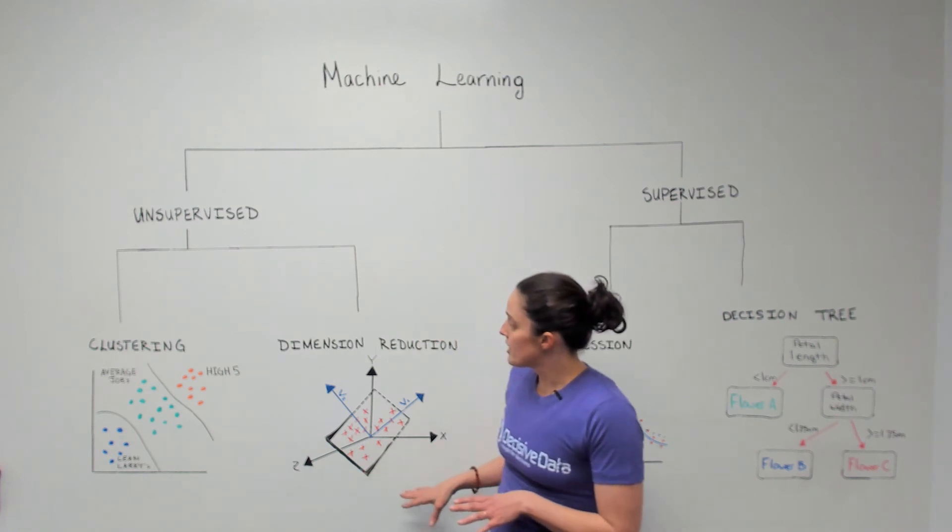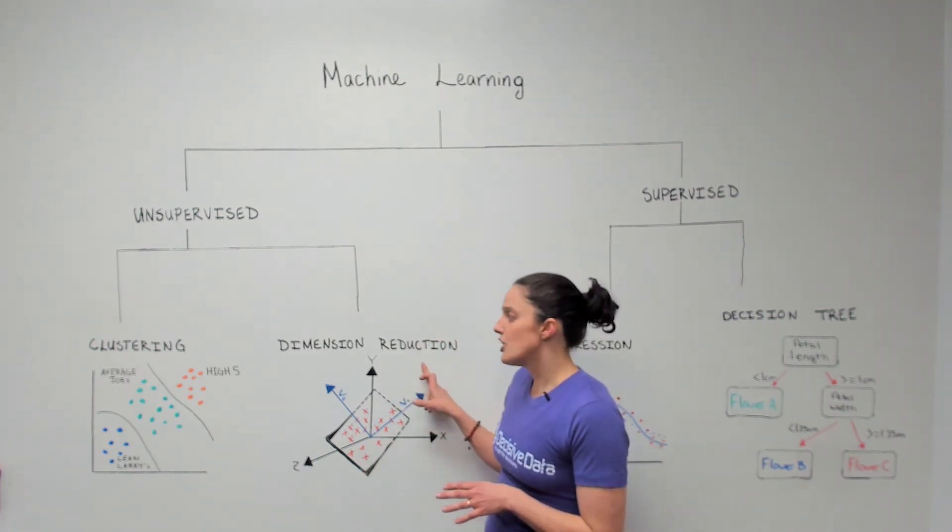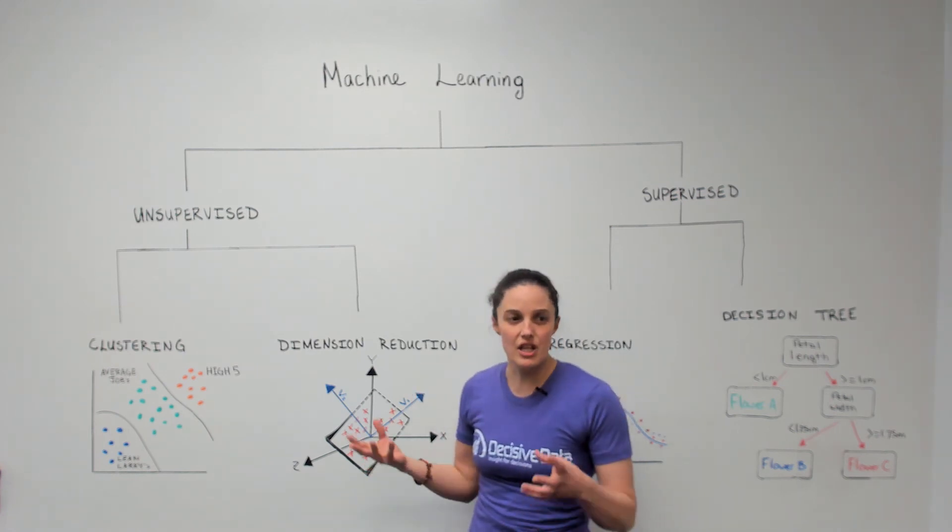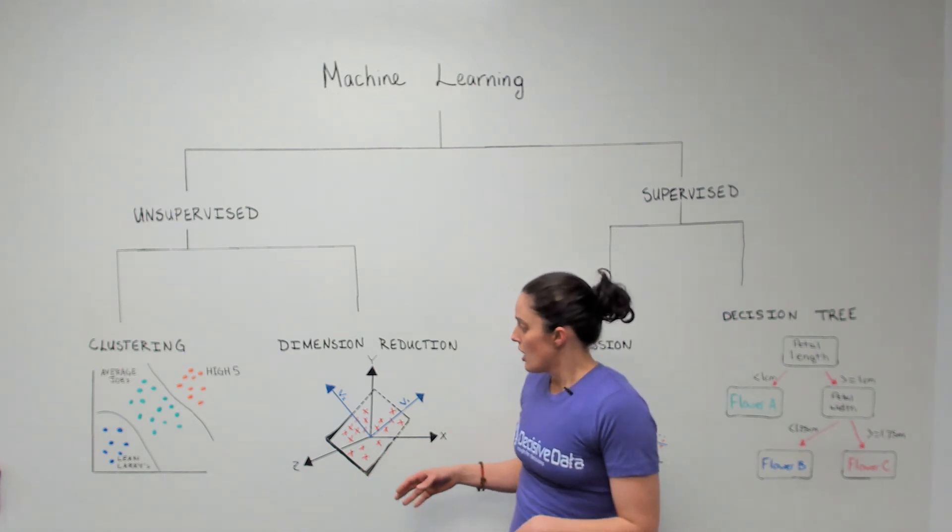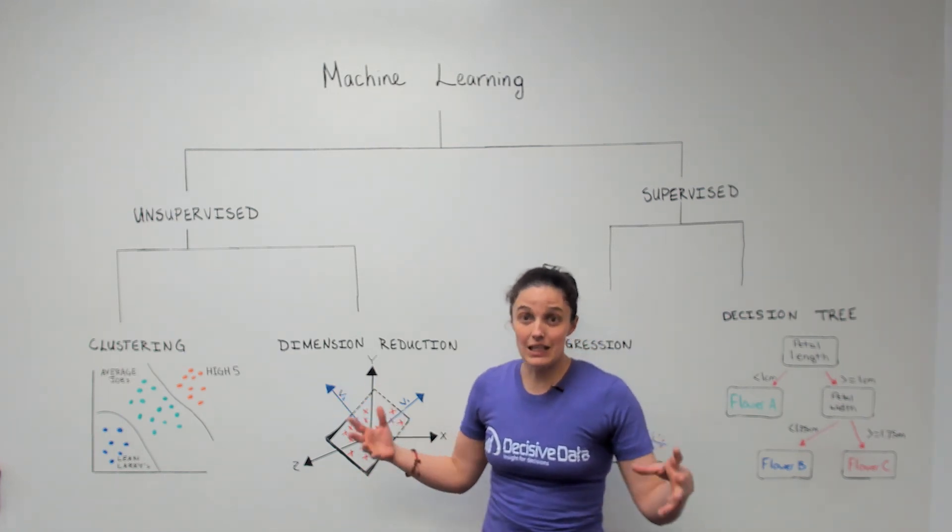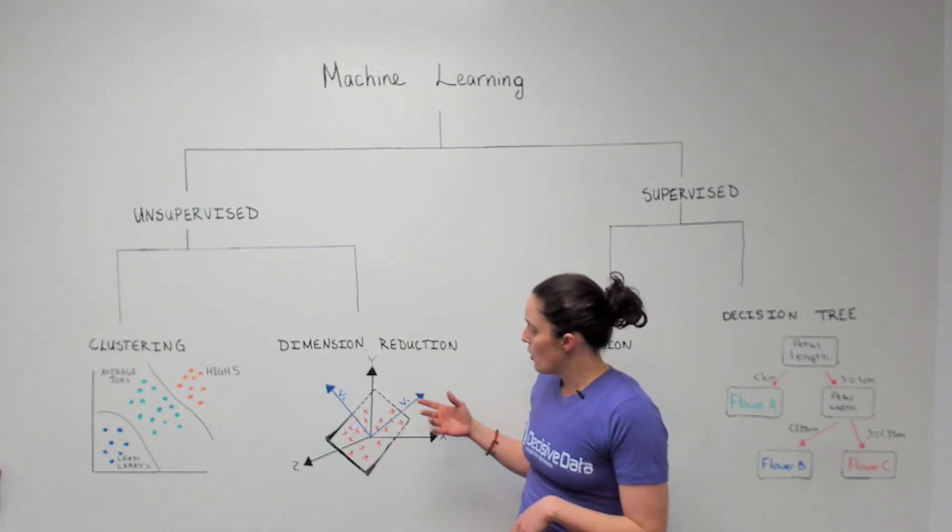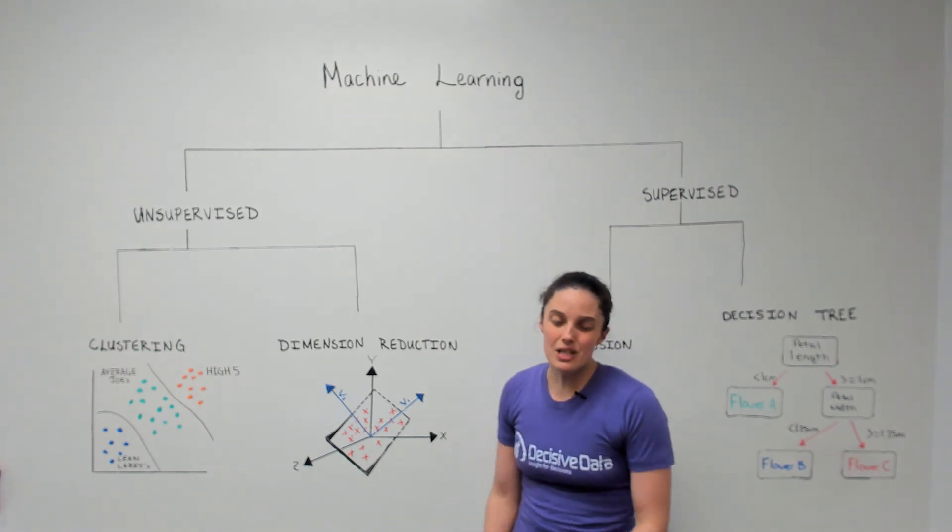Another really great use of machine learning is what's called dimension reduction. This is largely used as a tool to help data scientists reduce the number of dimensions that we're using in our models so that they can be more timely and effective. A lot of times we can have lots of variables and we'd like to reduce them down. One way to do this is when things are really obvious. So sometimes you just know that data isn't really going to matter.